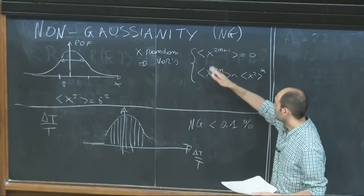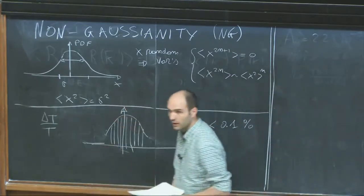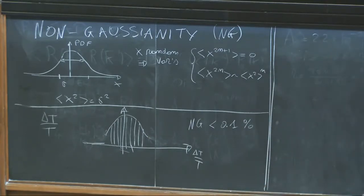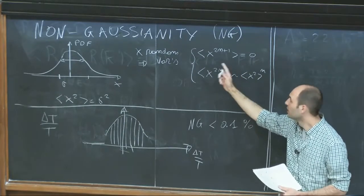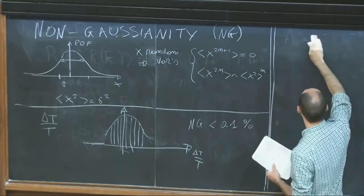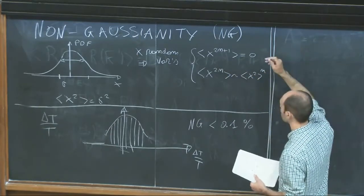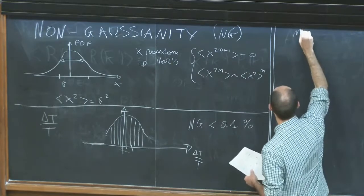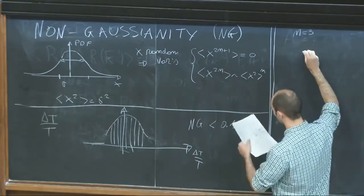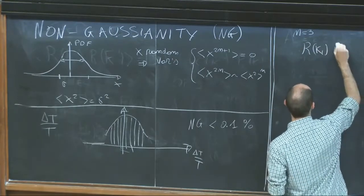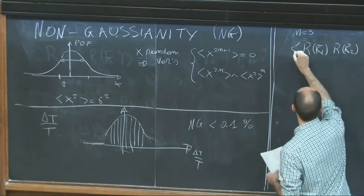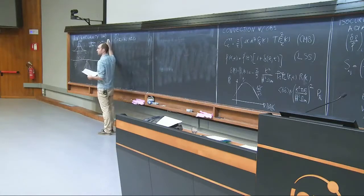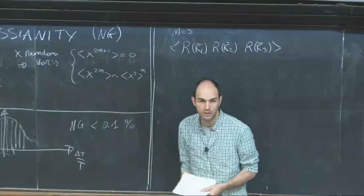In field theory, x is the perturbation R, which is of order 10^{-5}. So I take the smallest non-trivial correlator — since the average of perturbations is zero, the smallest n is n equals 3. I consider in particular three-point functions. I could also consider four-point or five-point functions, and any deviation from Gaussian behavior signals non-Gaussianity, but the simplest case is the three-point function.